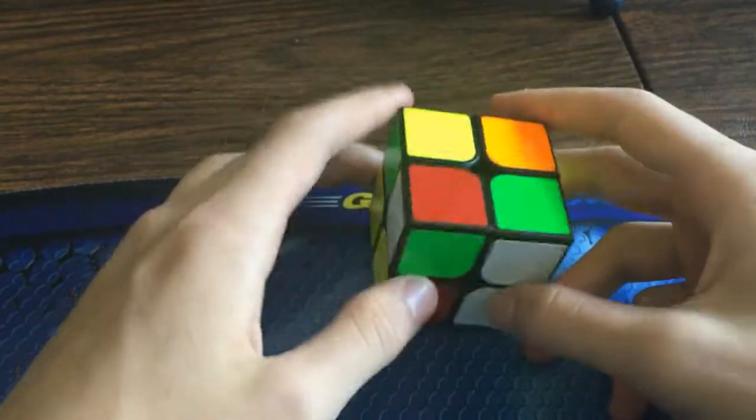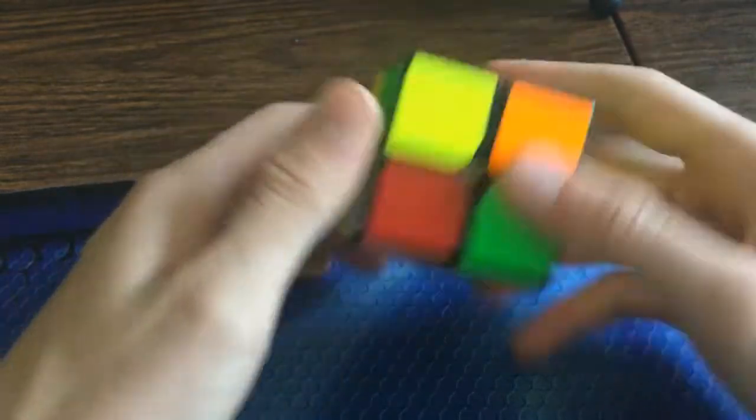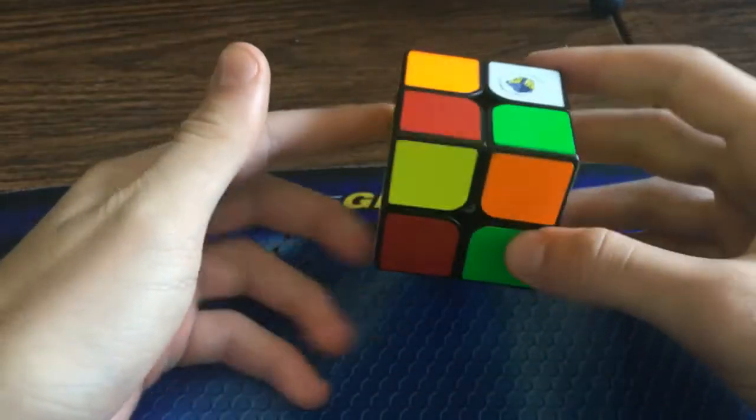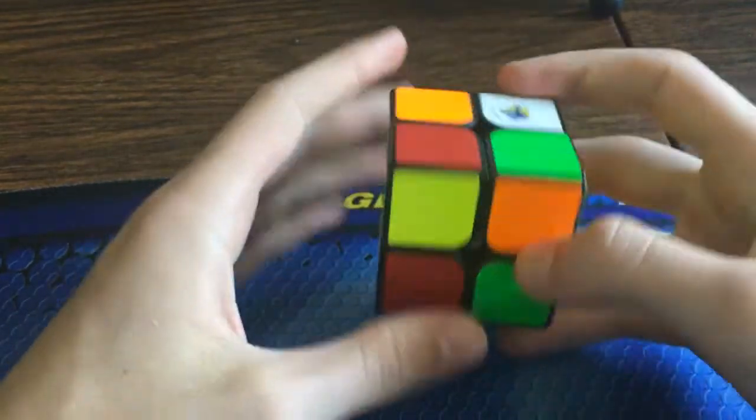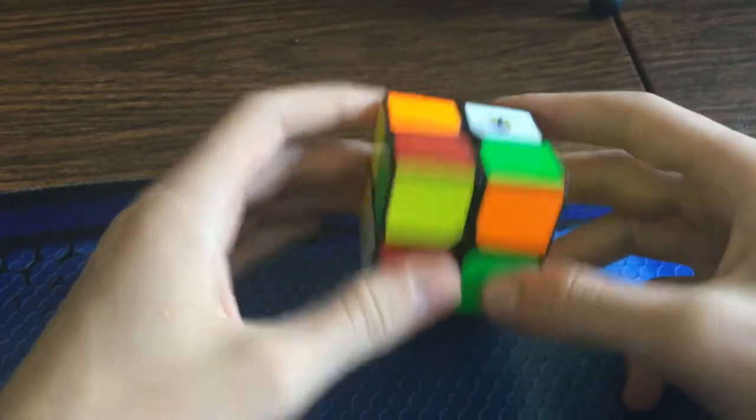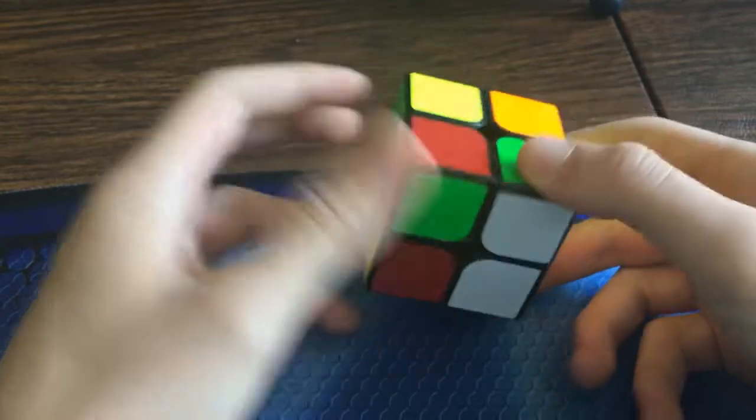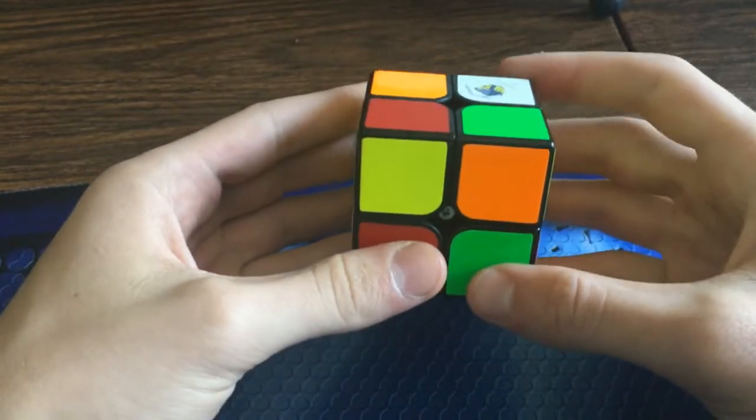So this next one here is just pure anti-soon. This alg starts with a rotation, but after that it's pretty fast and yeah, I use this quite a lot. It goes like, well, so X' and then R U' R2 U R2 B2 R'.